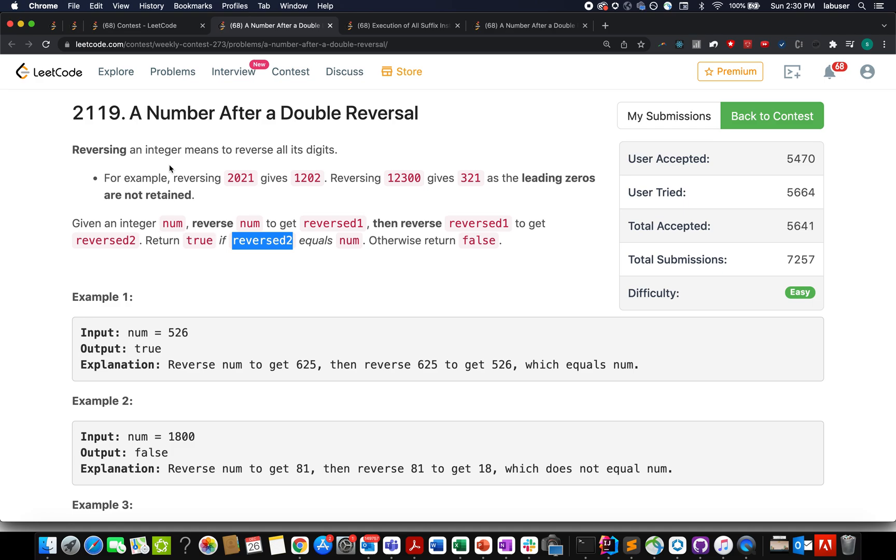The question says we are given an integer value. We need to reverse this integer value and we get the updated number as reversed1. Again, we need to perform the reversal operation on this number and we get the updated value as reverse2. In the end, we finally need to check if reverse2 happens to be equal to the input number. If it is, then we need to return true. If it is not, then we need to return false.